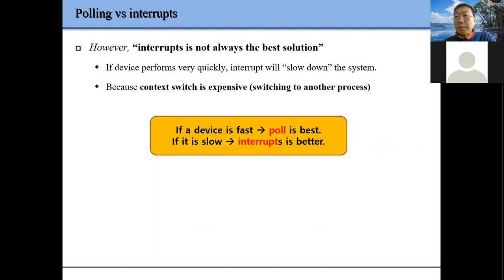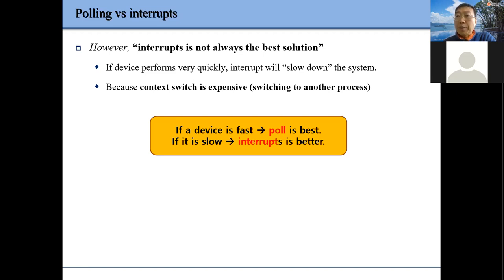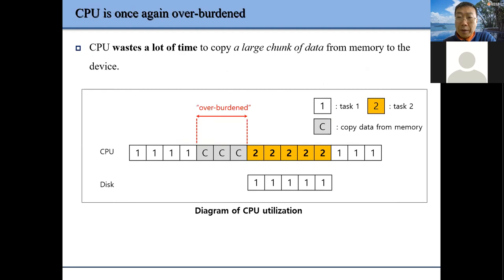Which one is better? Basically, if the IO operation is very fast, then polling is better; otherwise, interrupt is better. The reason is that when we do interrupt-based IO, we need to switch the context — we need to save a lot of registers, so it's very expensive. If the IO operation can finish very fast, maybe polling is better.